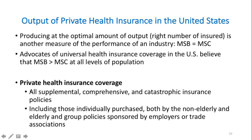Private health insurance coverage includes all supplemental, comprehensive, and catastrophic insurance policies — including those individually purchased by both non-elderly and elderly, and group policies sponsored by employers or trade associations. Although the elderly over 65 have Medicare, it doesn't cover all services such as dental and mental health, so most elderly still carry private health insurance, sometimes called Medigap.